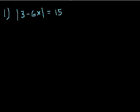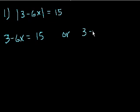Let's think about it. 3 minus 6x could clearly be 15, because the absolute value of 15 is 15. So we could say that 3 minus 6x could be equal to 15. But 3 minus 6x could also be equal to minus 15, right? Because the absolute value of minus 15 is also 15. So let's write that down. Or 3 minus 6x is equal to minus 15. If this was equal to minus 15, you take the absolute value, you'd get positive 15. So either of these could be true.